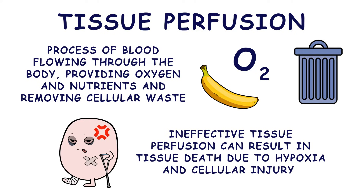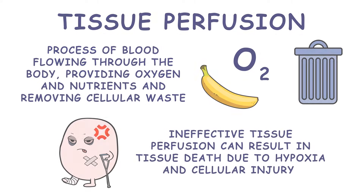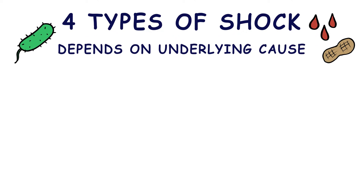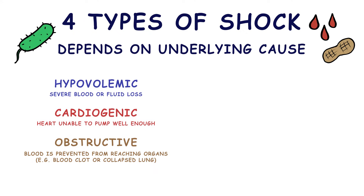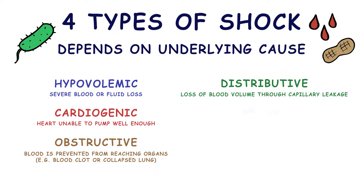Ineffective tissue perfusion can result in tissue death due to hypoxia and cellular injury. There are four types of shock depending on underlying cause: hypovolemic, cardiogenic, obstructive, and distributive, which encompasses anaphylactic, septic, and neurogenic shock.